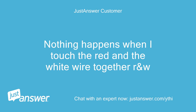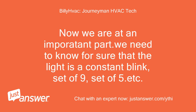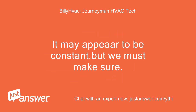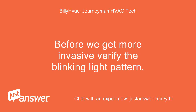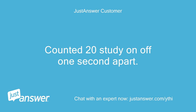Nothing happens when I touch the red and the white wire together — R and W. Now we are at an important part: we need to know for sure whether the light is a constant blink, a set of 9, a set of 5, etc. It may appear constant, but we must make sure. Before we get more invasive, verify the blinking light pattern. Is the filter clean? Is the blower running? Count it — study 20 on/off cycles, one second apart.